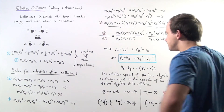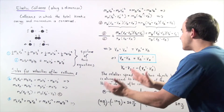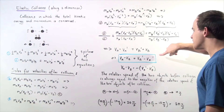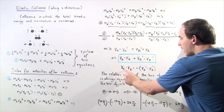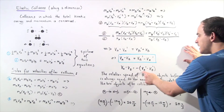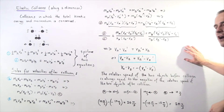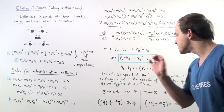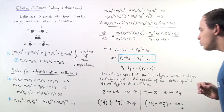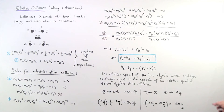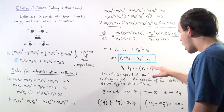Bringing all velocities before the collision to one side and all velocities after to the other, we get a rearranged result: VA minus VB equals the negative of VA prime minus VB prime. This tells us that the relative speed of the two objects before the collision is always equal to the negative of the relative speed after the collision.